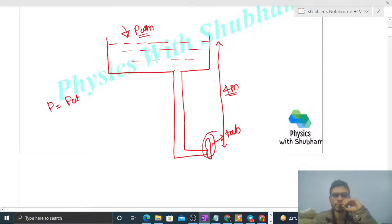That is P atmospheric plus rho into g into h. Now the density of water is 1000, g is given as 10, and h is 4. So this will be 40,000 plus P atmospheric. But in the answer...